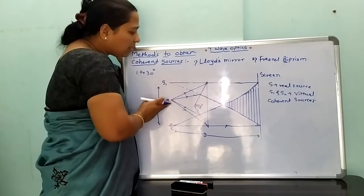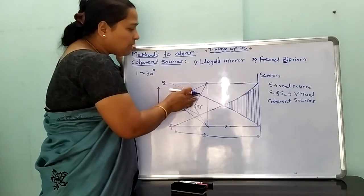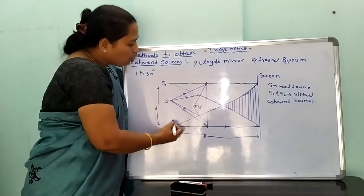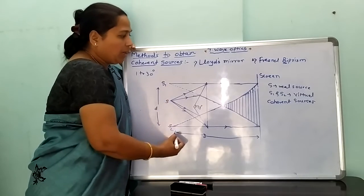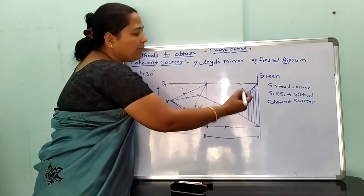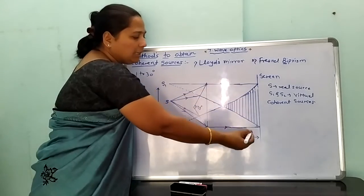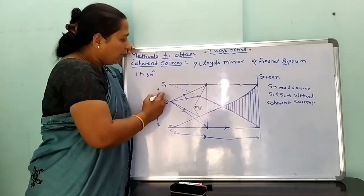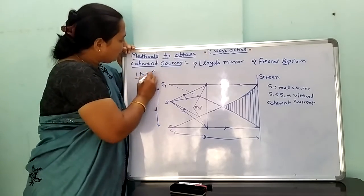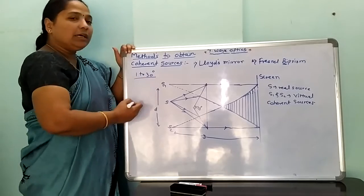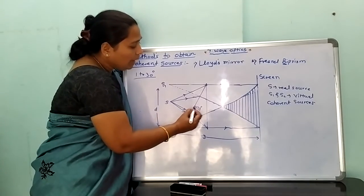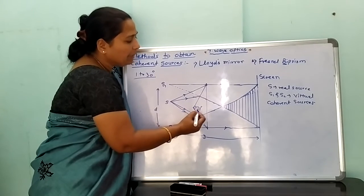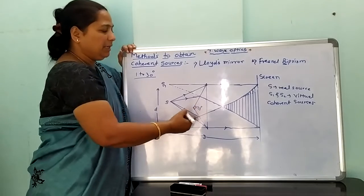The waves emitted by the source are refracted by the biprism to form two virtual sources S1 and S2, and an interference band is obtained on a screen. That method is known as the Fresnel biprism experiment. The reflecting angle of each prism is between 1 to 30 degrees, and the angle of the prism is above 179 degrees. Therefore, that prism is known as a biprism.